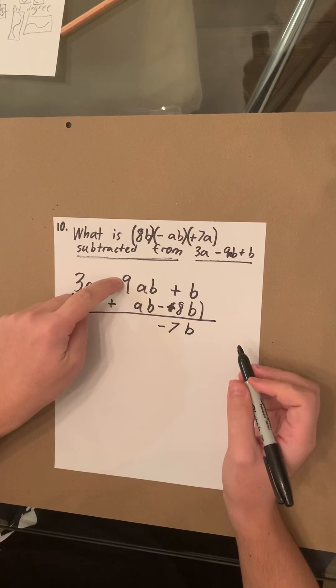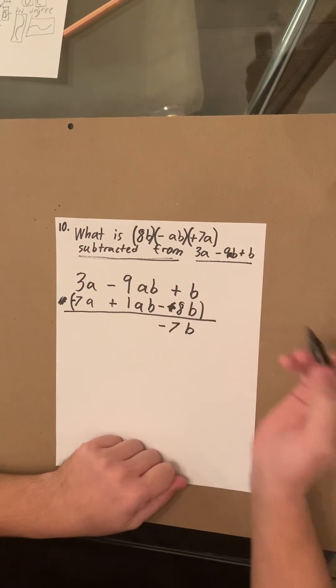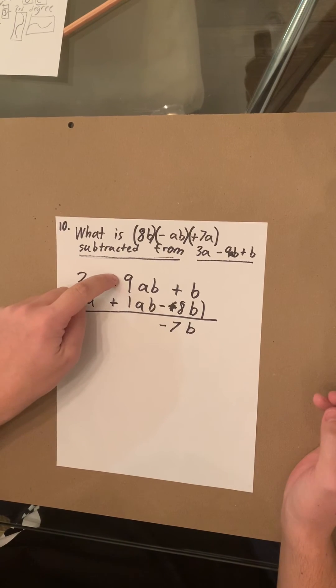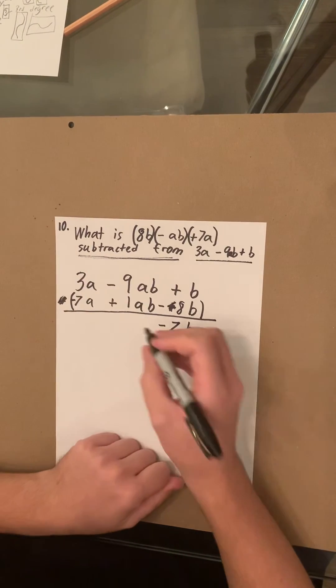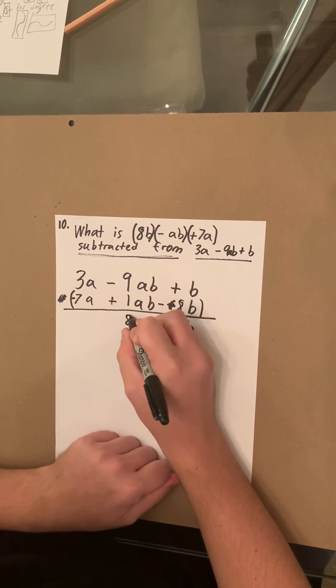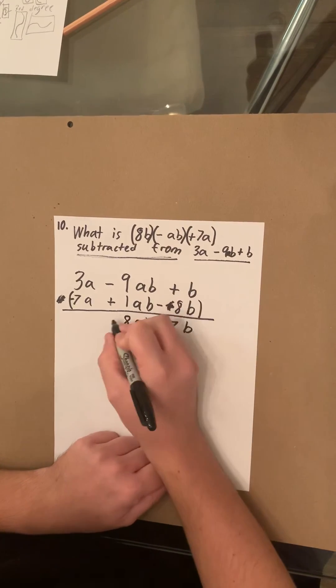Negative 9AB plus AB. We can put 1AB so we can see a number. Negative 9AB plus 1AB equals 8AB, but remember it's negative.